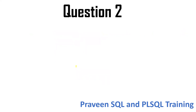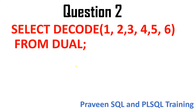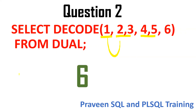The second question is about DECODE. CASE and DECODE are the same conditional statement. Remember: DECODE works as key-value pairs. The first value is being matched with two — not correct. Matching with four — not correct. So when a key matches, it displays the corresponding value. Since none of the conditions match, it will go to the else part. The answer is six.